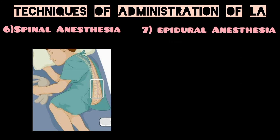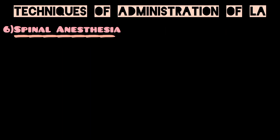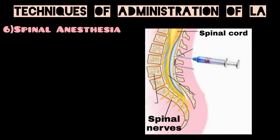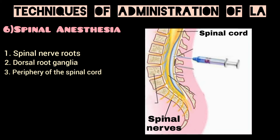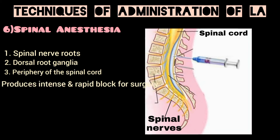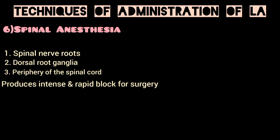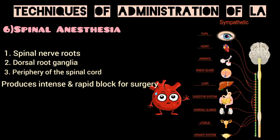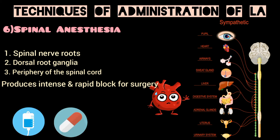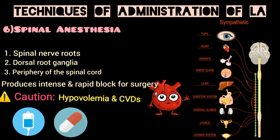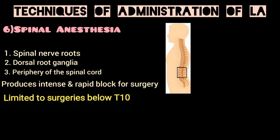Spinal anesthesia is achieved by injecting a single shot of local anesthetic into the lumbar intrathecal space. It blocks the spinal nerve roots, dorsal root ganglia, and probably the periphery of the spinal cord. It produces an intense and rapid block for surgery, but due to the autonomic sympathetic block it results in hypotension. The patient should be preloaded with IV fluids and vasoconstrictors, and it should be given with caution in patients with hypovolemia and cardiovascular diseases.